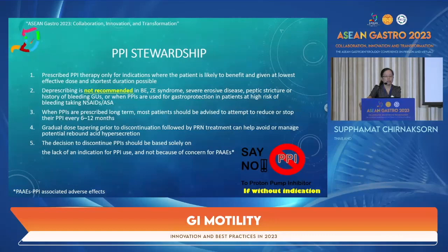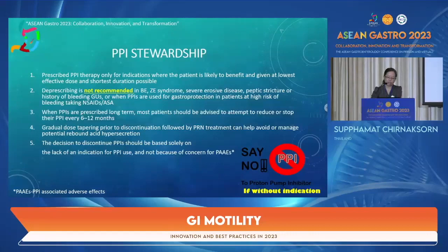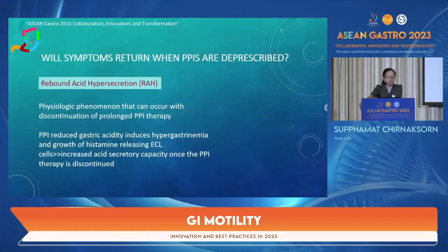Most patients should attempt to reduce or stop their PPI every 6 to 12 months. Gradual dose tapering prior to discontinuation, followed by on-demand treatment, can help avoid rebound acid hypersecretion. The decision to discontinue PPI should be based on the lack of indication, not on concern about PPI-associated adverse events.